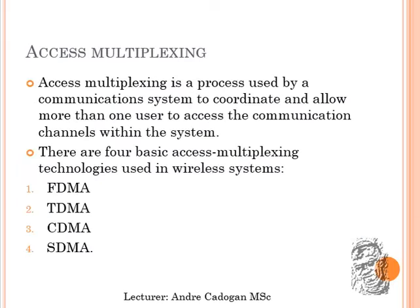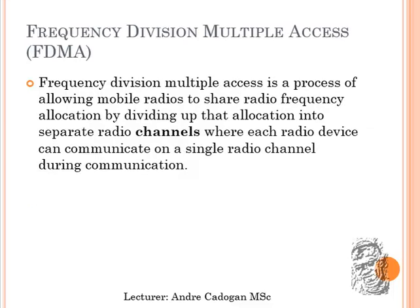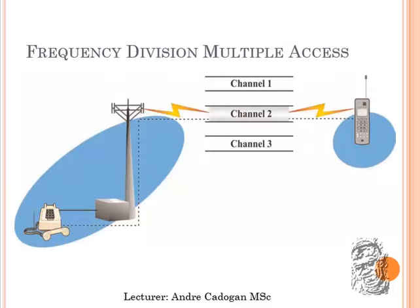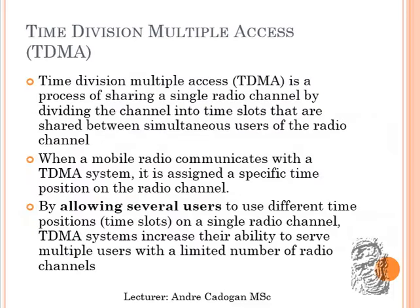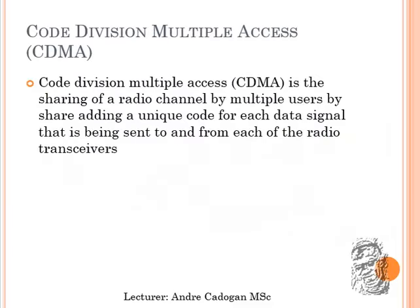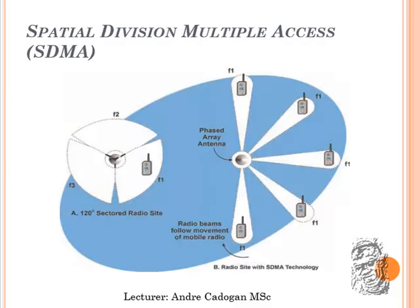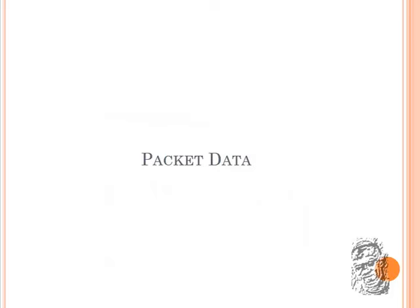Coming to multiple accessing technologies: the four basic multiplexing technologies are FDMA — Frequency Division Multiple Access — TDMA — Time Division Multiple Access — CDMA, and SDMA. There is a whole separate topic to cover in terms of TDMA, CDMA, and so on. Next class we are going to discuss those multiple accessing technologies in detail.